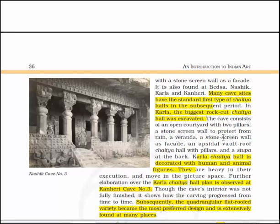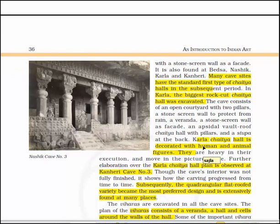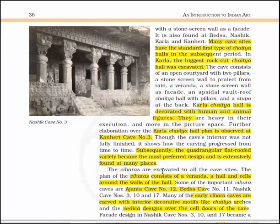The cave at Karla consists of an open courtyard with two pillars, a stone screen wall to protect from rain, a veranda, a stone screen wall as a facade, and an apsidal vault-roof chaitya hall with pillars and a stupa at the back. The Karla chaitya hall is decorated with human and animal figures that are heavy in their execution and move in the picture space. Further elaboration over the Karla chaitya hall plan is observed at Kanheri cave number 3.